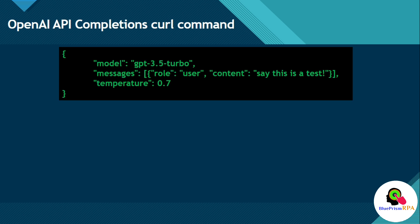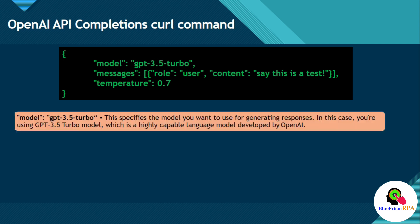Let me explain this data — model, messages, temperature, role, and content. This is in JSON format. Model is a property and GPT-3.5 Turbo is the value — it's like a key and value pair. This specifies the model you want to use for generating a response. In this case, you are using the GPT-3.5 Turbo model, which is a highly capable language model developed by OpenAI.